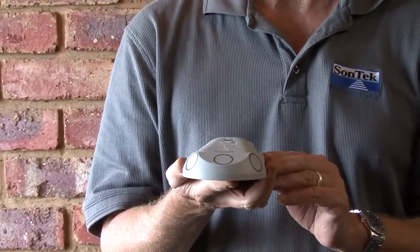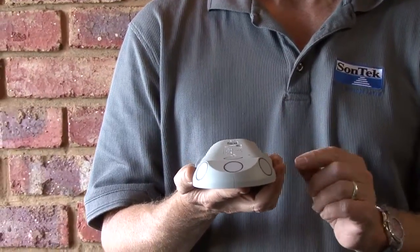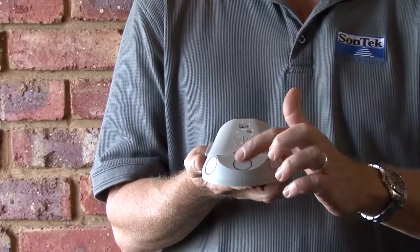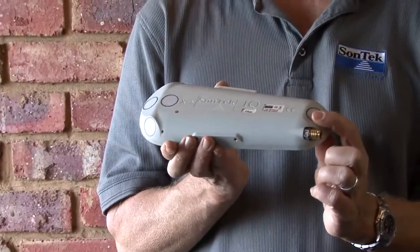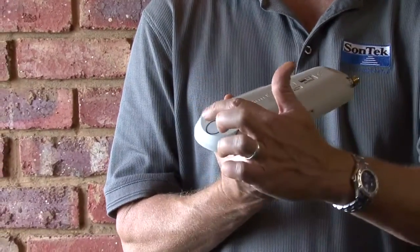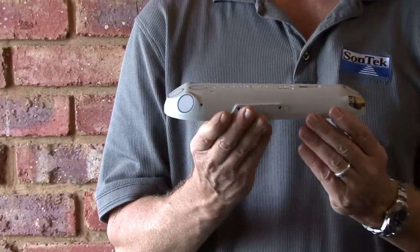We actually use acoustics to measure velocity and water level. These are acoustic transducers. They have a 3 megahertz frequency, and these outside beams here are what we use to scan the velocities in the channel.